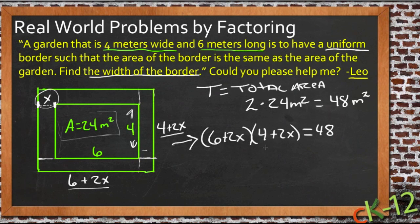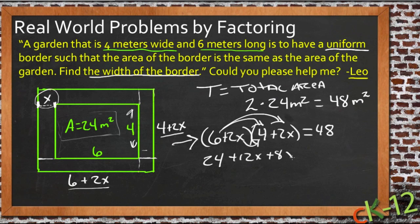Now we can just FOIL this out: 6 times 4 is 24, 6 times 2x is 12x, 2x times 4 is 8x, and 2x times 2x is 4x² equals 48.